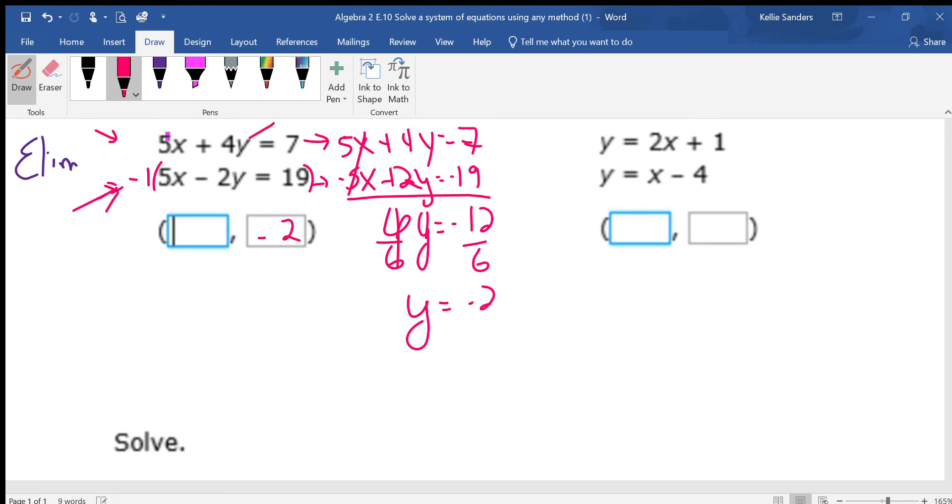If y equals negative 2, I can put negative 2 into this equation or into this one. I'll use the bottom one. 5x minus 2 times y equals 19. What's y? Negative 2. Negative 2 times a negative 2 is a positive 4. Subtract the 4. 15. Divide by 5. x is 3.